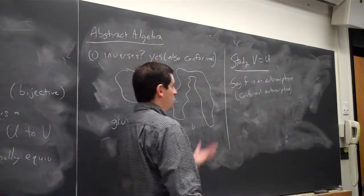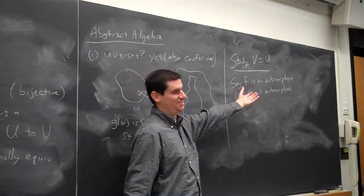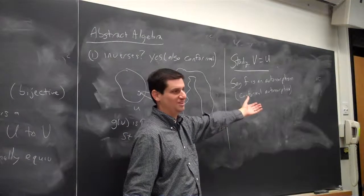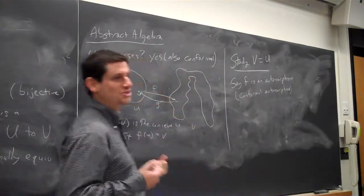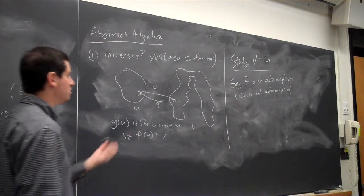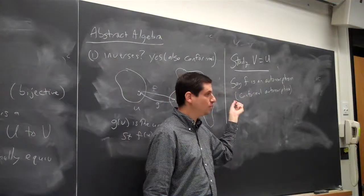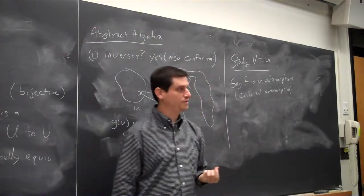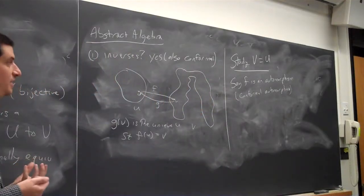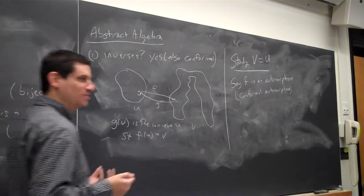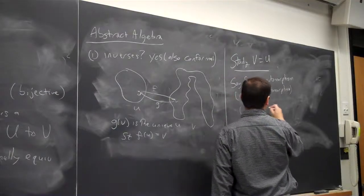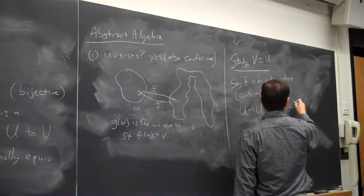No matter what U is, you can always give me an automorphism from U to U — the set of automorphisms is not empty. One of the big questions in the subject is: if I give you two sets U and V, are they conformally equivalent? Can I find a conformal map from U to V? Well, if V equals U, yes — you could have done that years ago. So U to U always has the identity automorphism.